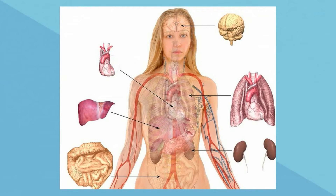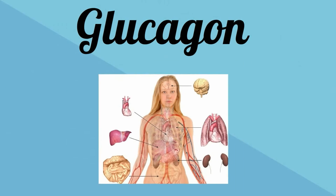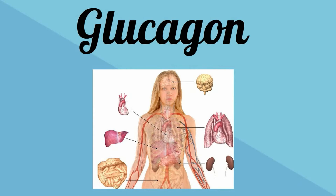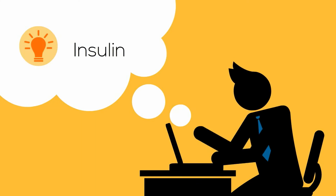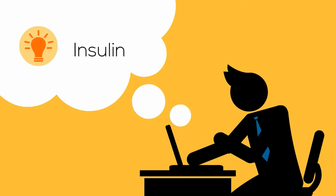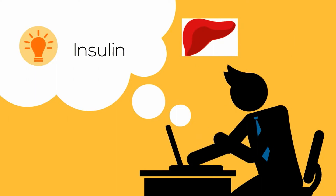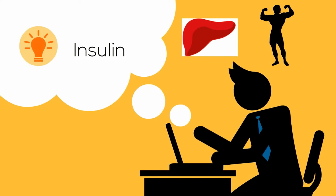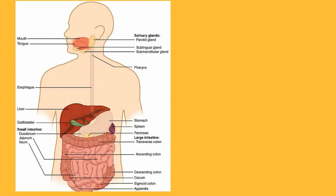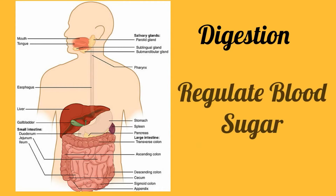The pancreas produces two hormones to help control blood sugar. The first is glucagon, which raises glucose levels by stimulating the liver to metabolize glucagon into glucose molecules that are then released into the blood. The second hormone is insulin, which lowers blood glucose levels after a meal by stimulating the absorption of glucose by the liver along with muscles and fat tissues. So the pancreas has two very important roles: it helps with digestion and also helps regulate our blood sugar.